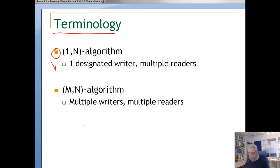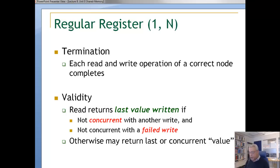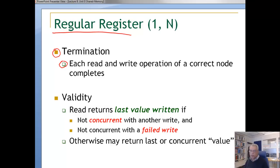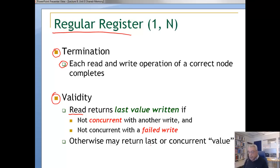Let us start with a very simple intuitive definition that makes sense if we have a single writer. These are the properties of what we call a regular register — a very simple type of register. First, termination: each read and write operation of a correct node completes. If a node is correct, whenever it invokes an operation it will always get a response — this is a liveness property. The other property is validity, which is a safety property: a read returns the last value written, where 'last' is defined when the read is not concurrent with a write and not concurrent with a failed write.